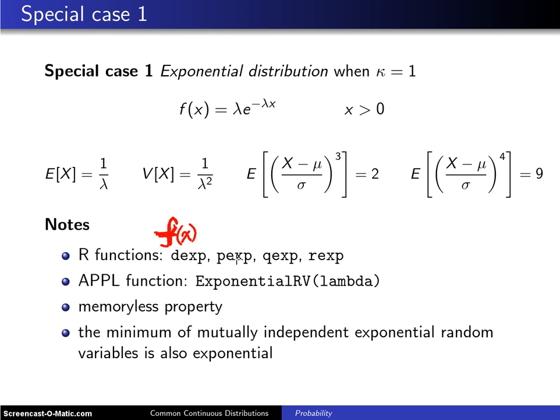The second function is known as pexp, and whereas dexp gives you little f of x, pexp gives you capital F of x. Then there is qexp, and that gives you F inverse of u, and finally there is rexp, which will throw exponential random variance.